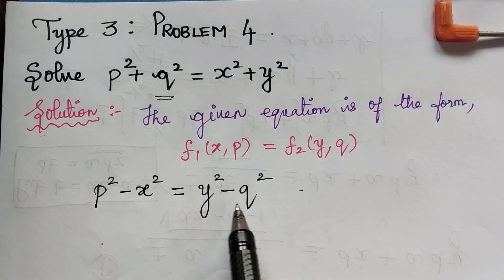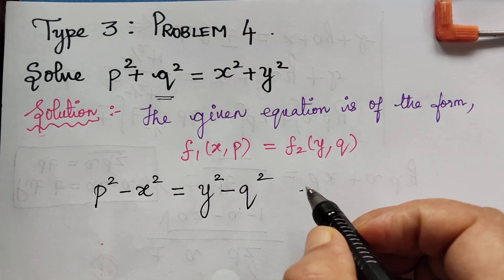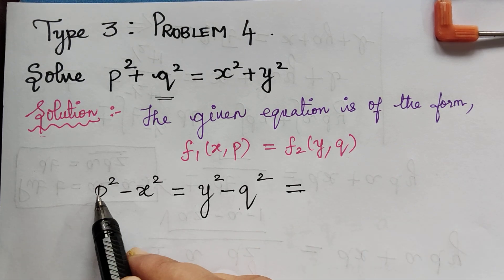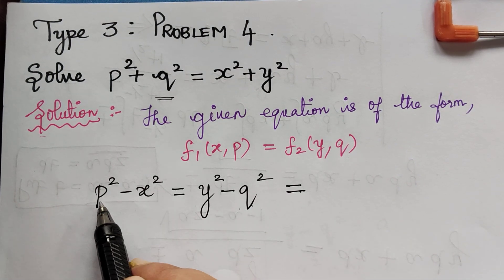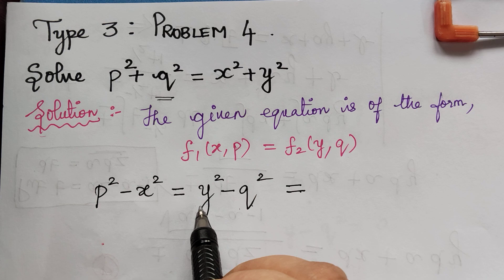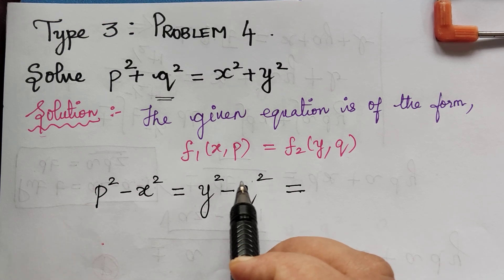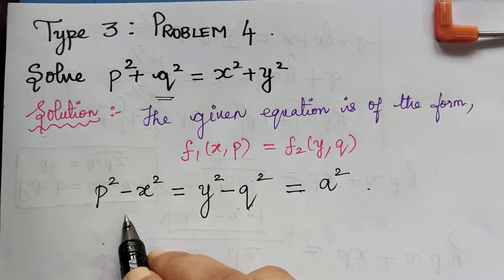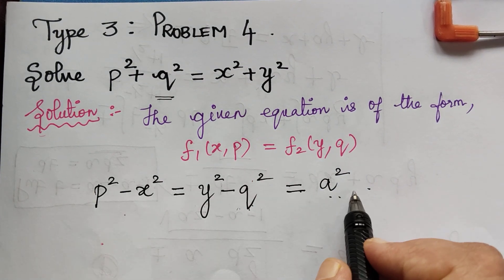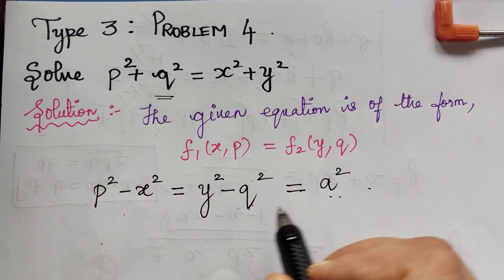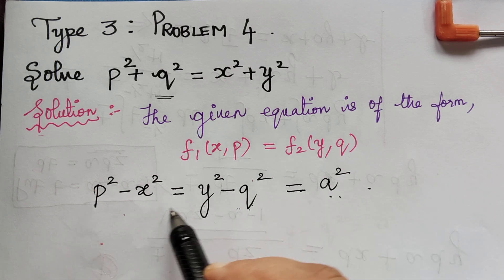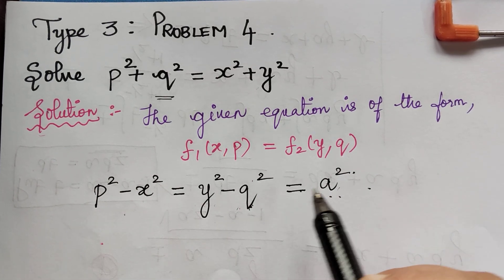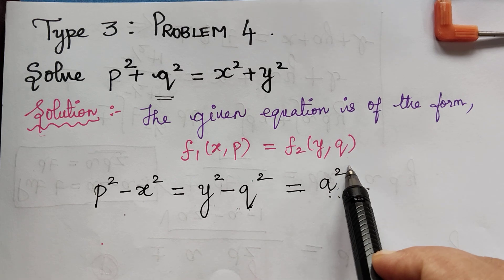We have obtained this. Now we have to equate this to a constant. Since we have squares in all the terms — p², x², y², and q² — we will equate it to a square term a². We can also equate it to a, there is no wrong in that, but in order to have the answer in a comfortable way, I am equating it to a² since all the terms are in square.